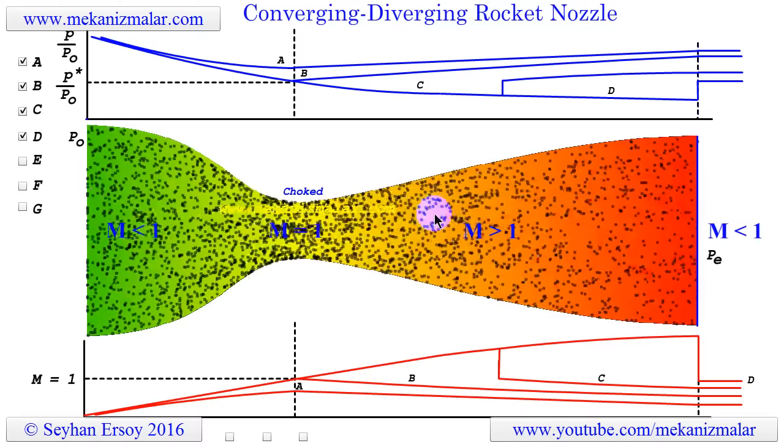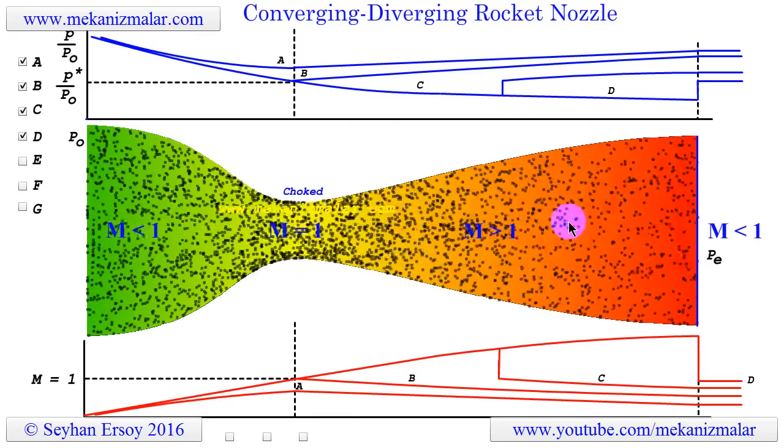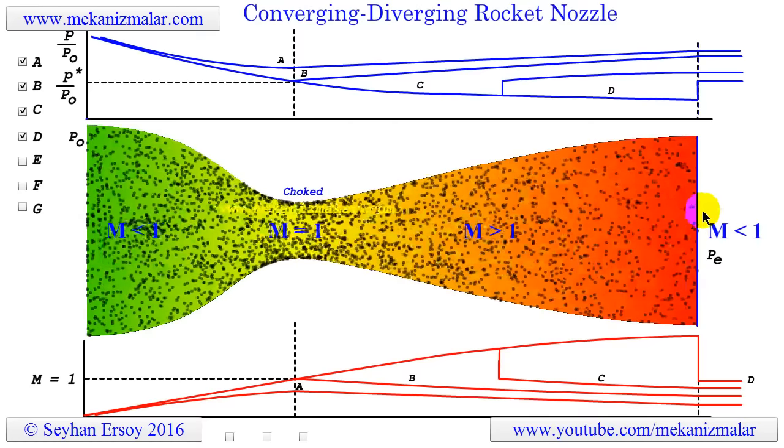So, for case D, we will adjust the exit pressure such that a normal shock wave will be generated at the exit of the nozzle.